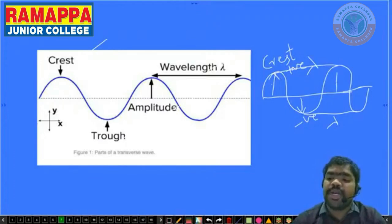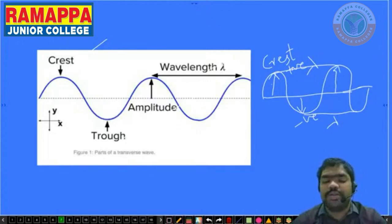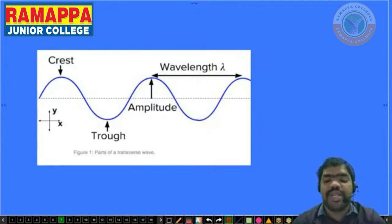Maximum displacement — the crest and trough are the amplitude. These are the important concepts or parts of a transverse wave.